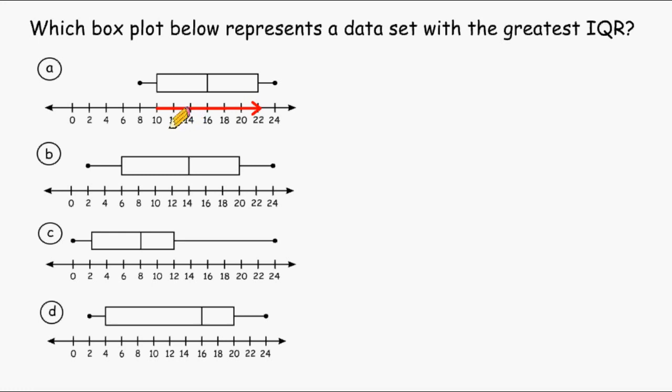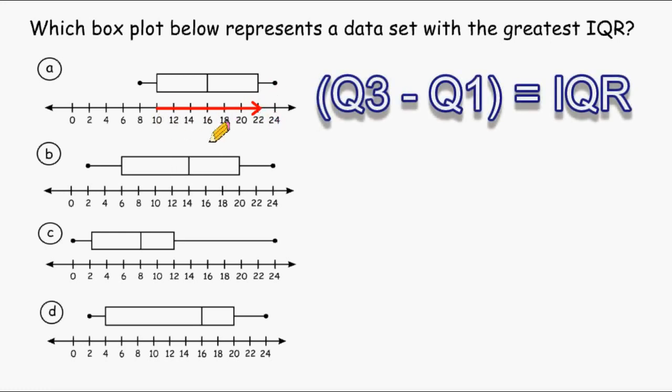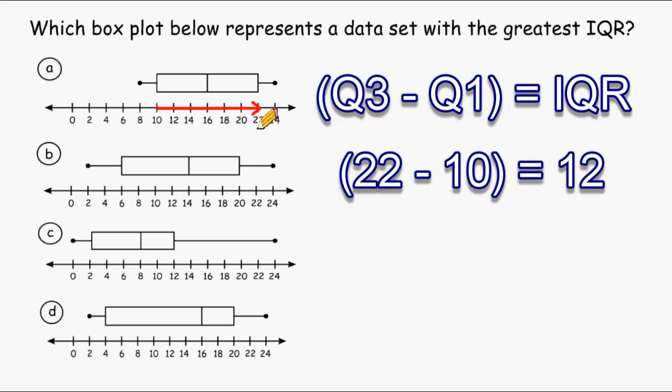Now, the point at which your boxes start is called Q1, and the point at which your boxes end is called Q3. So if you subtract Q1 from Q3, that will give you the IQR. The distance between 10 and 22, or 22 take away 10, is 12.